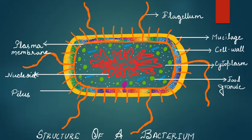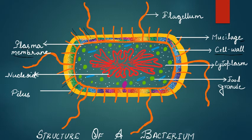Let us see the structure of a bacterial cell. Looking at its microscopic structure, we see that the outermost covering is a layer of mucilage. After mucilage comes the cell wall, and after the cell wall there is a thin membrane called the plasma membrane. From the plasma membrane arise a number of hair-like structures, present in all bacterial cells except the round-shaped bacteria.